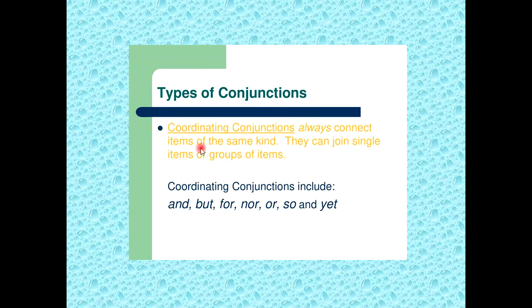Coordinating conjunctions always connect items of the same kind. They can join single items or groups of items. Coordinating conjunctions include: and, but, for, nor, or, so, and yet.